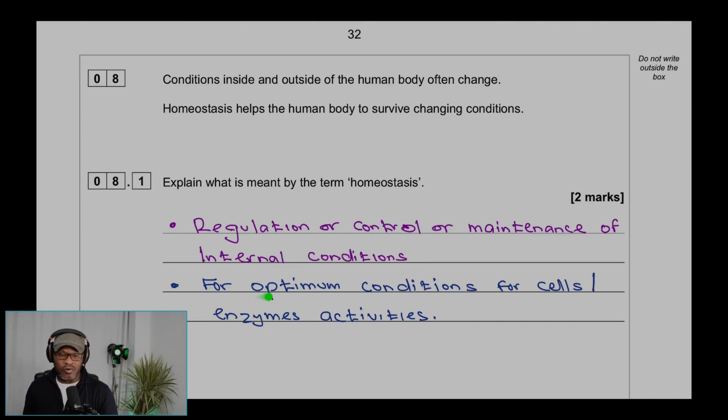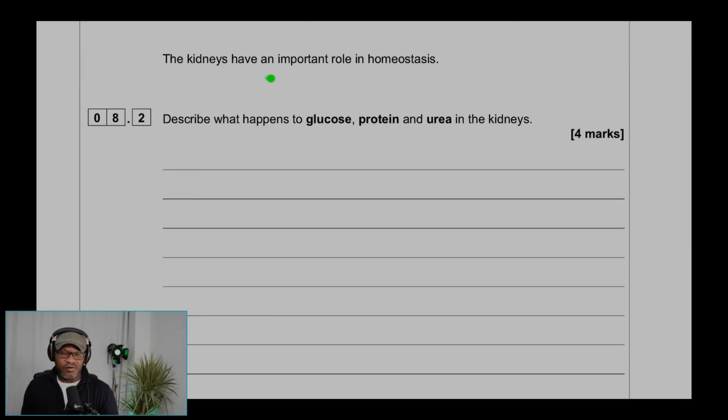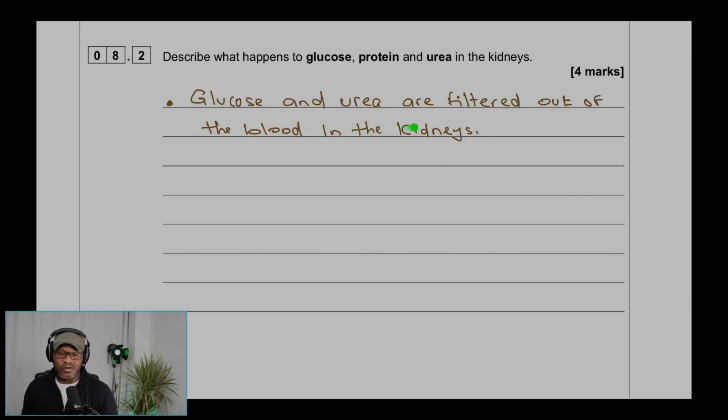The kidneys have an important role in homeostasis. 8.2: Describe what happens to glucose, protein, and urea in the kidney. Glucose and urea are filtered out of the blood in the kidney.